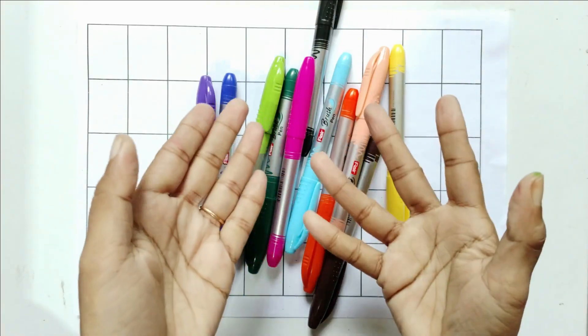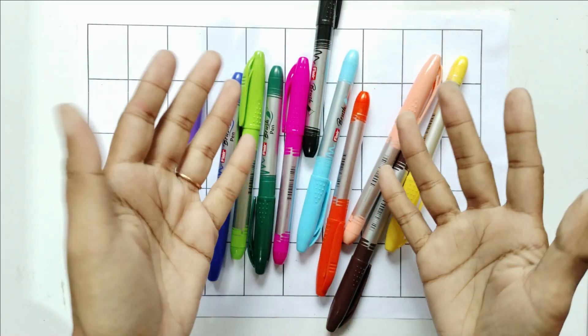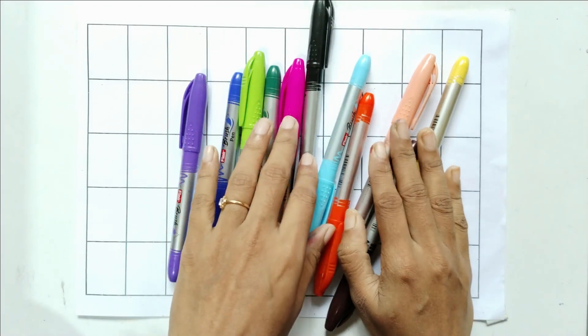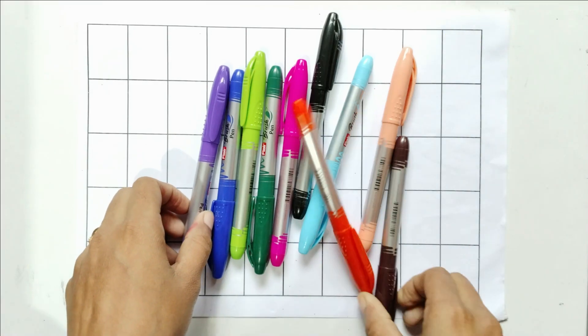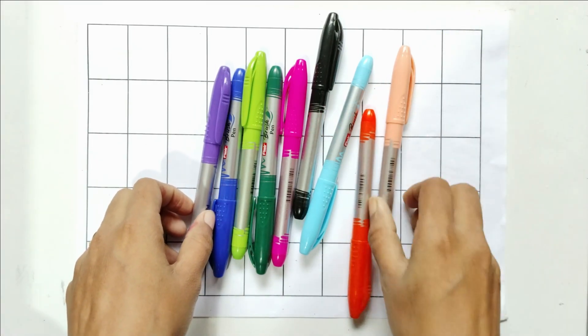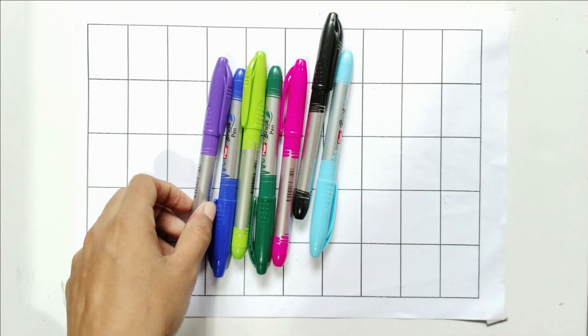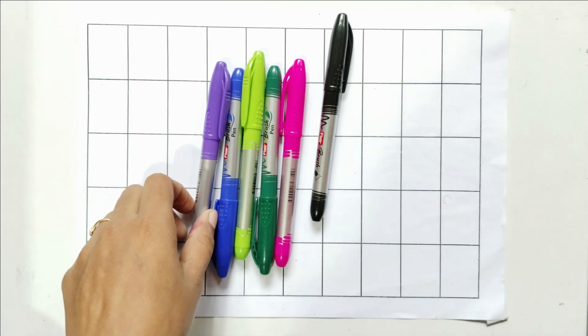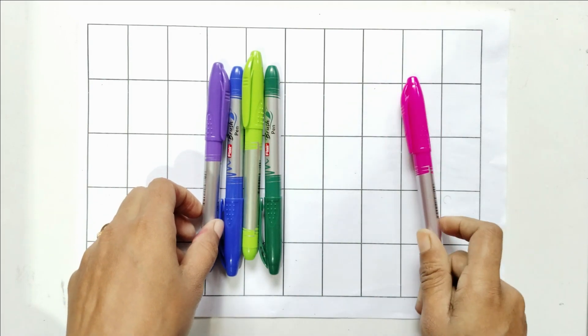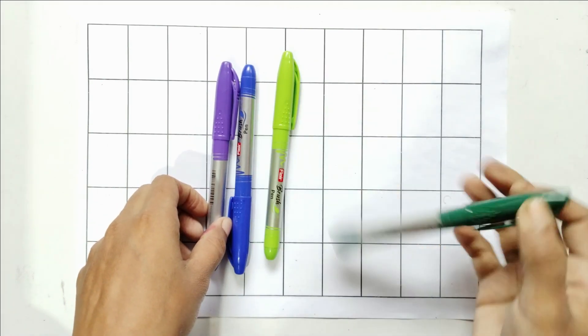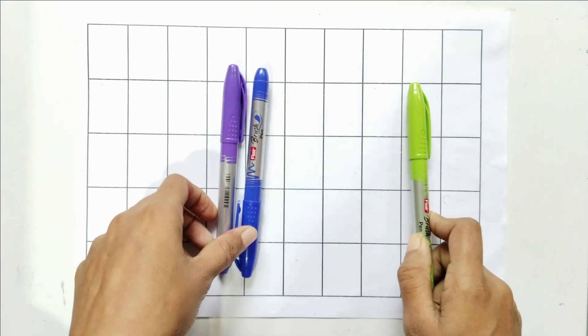Hello kids, today we will learn colors name and counting numbers. At first, say with me colors name: yellow, brown, peach, orange, sky blue, black, pink, green.